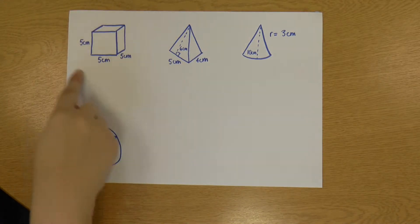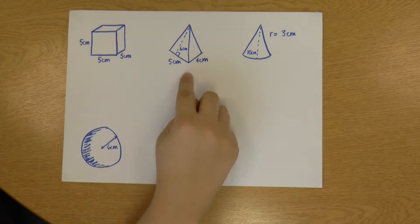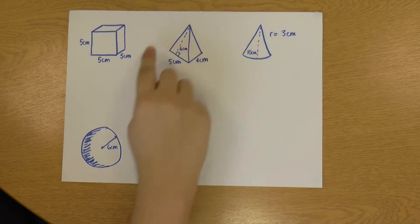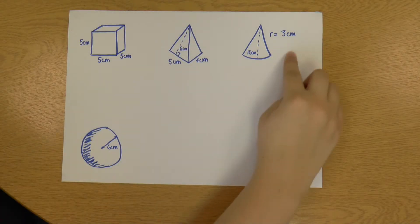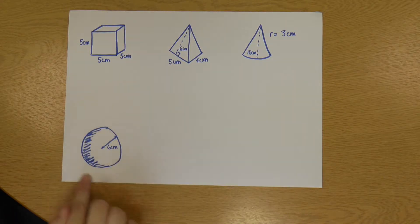I've got a cuboid, I've got a pyramid. I know they're terribly drawn, I do apologize, but this is a pyramid. It's actually a rectangular based pyramid. I've got a cone and I've got a sphere, which I've tried to show with this terrible shading, but pretend it looks 3D.